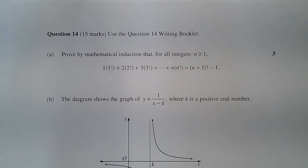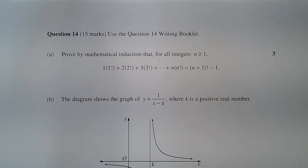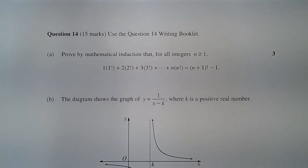Question 14a. Prove by mathematical induction that, for all integers n greater than or equal to 1, 1 multiplied by 1 factorial, plus 2 multiplied by 2 factorial, plus 3 multiplied by 3 factorial, plus dot dot dot, plus n multiplied by n factorial, equals n plus 1 factorial minus 1.